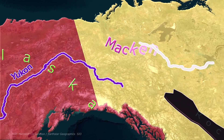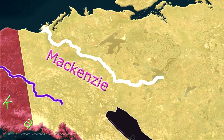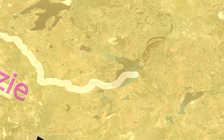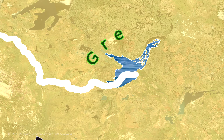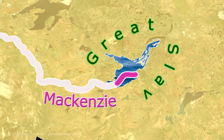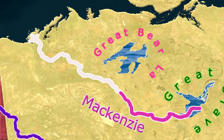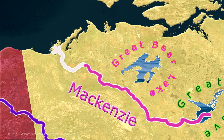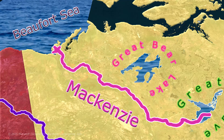Now let us learn about the Mackenzie River. It is the longest river in Canada. The river begins from the Great Slave Lake, the deepest lake in North America, then flows northward, before finally emptying into the Beaufort Sea of the Arctic Ocean.